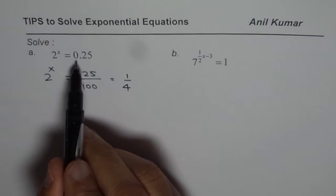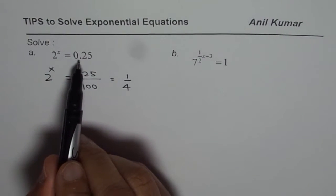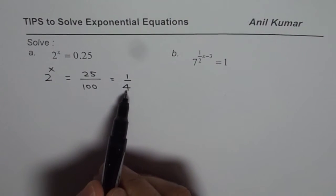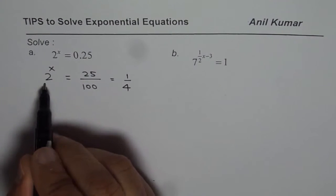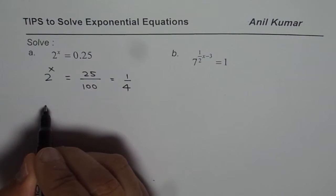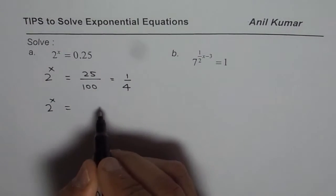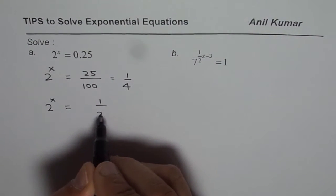Sometimes when you're given decimal values, you may want to write them as fractions and then solve the equation. So now we have 2^x = 1/2².